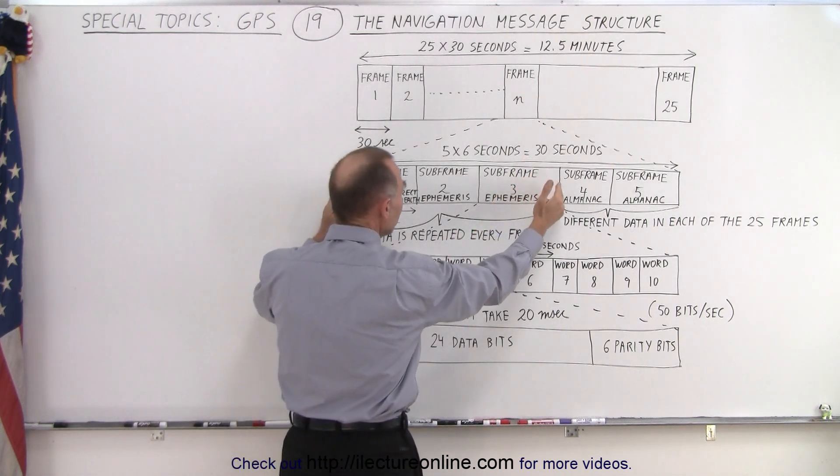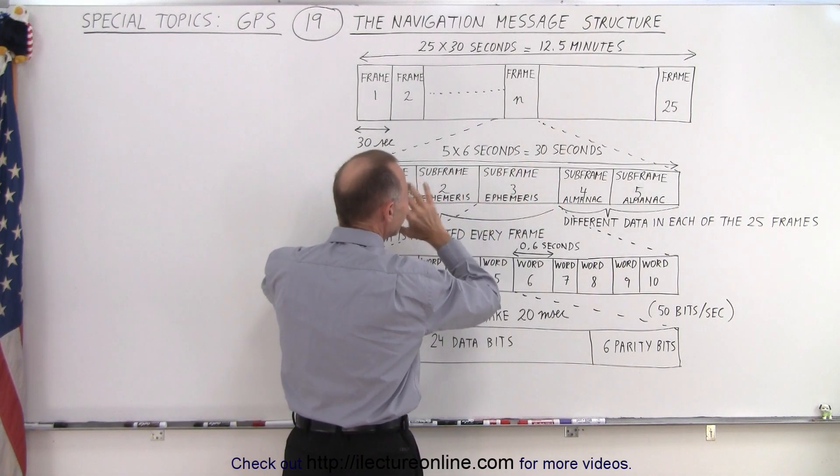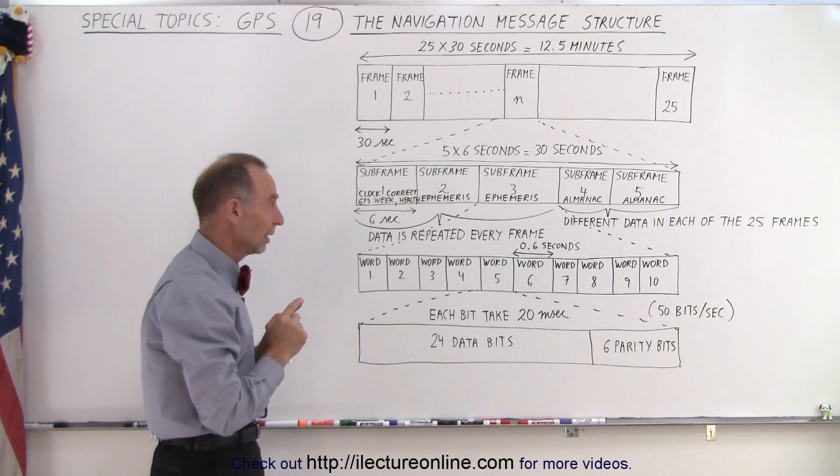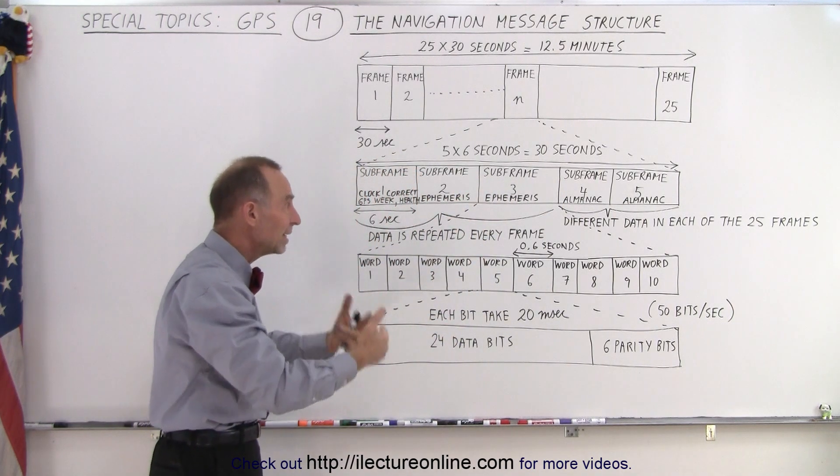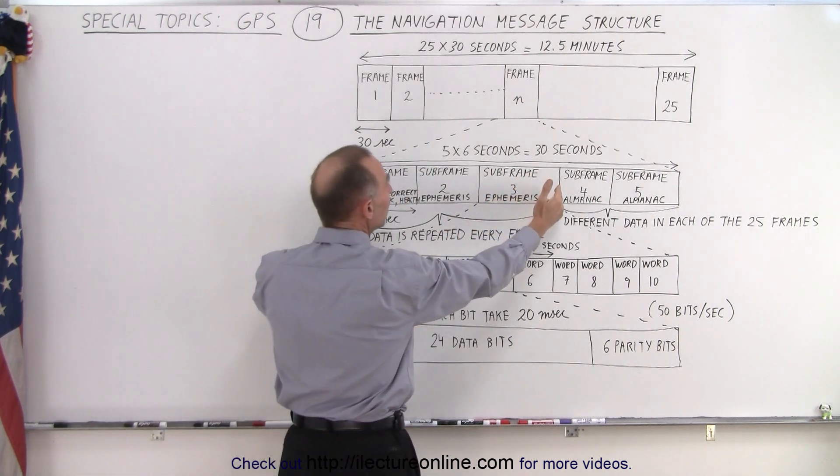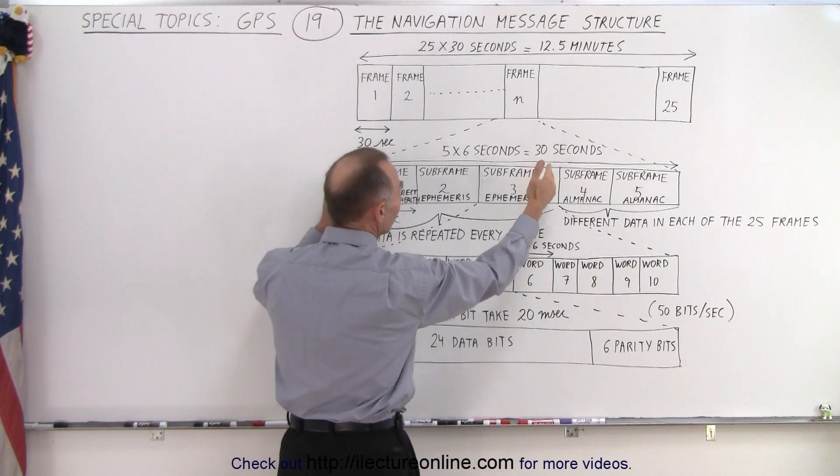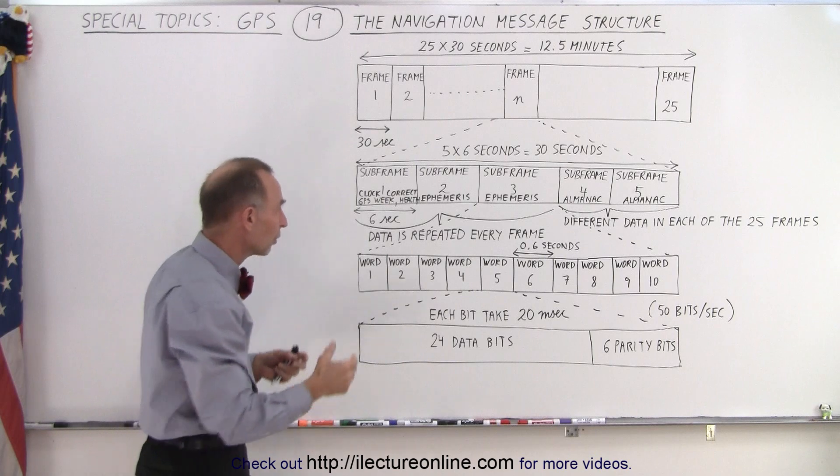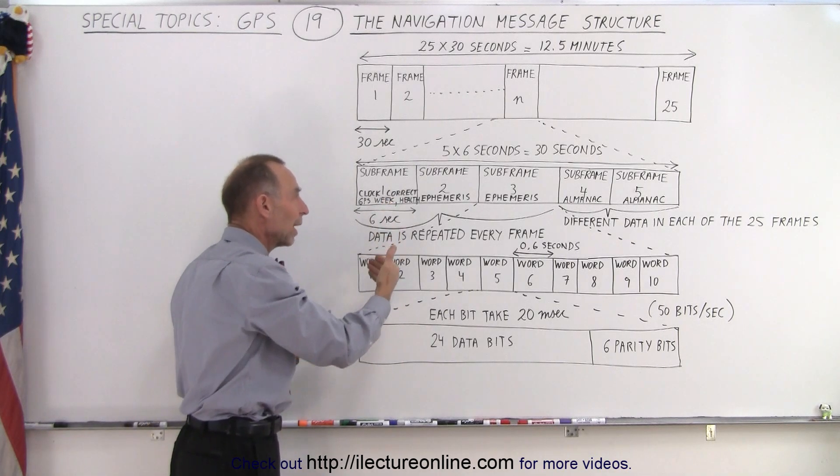And each of those frames contains five subframes. And the first three subframes, they contain information specific for that satellite. And that information is repeated every single time a frame is sent. So this is repeated information that every 30 seconds, you get the same information sent. However, things such as clocks and so forth, they will of course progress, and that data will then be updated on a regular basis every 30 seconds.